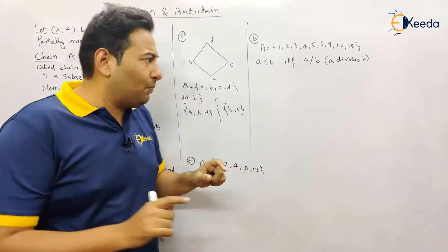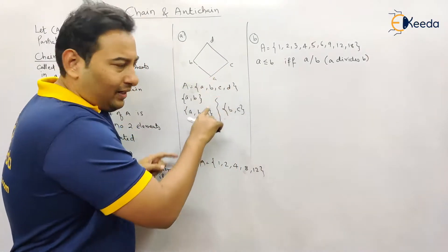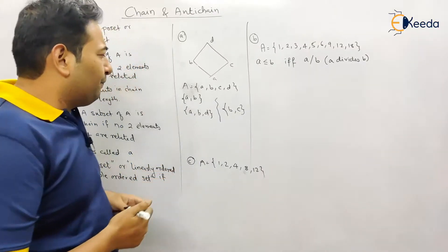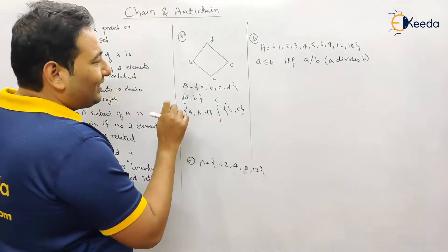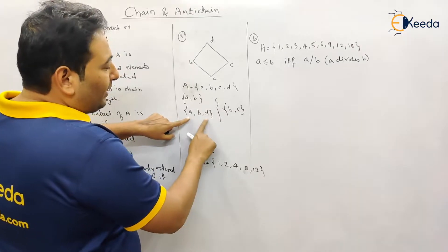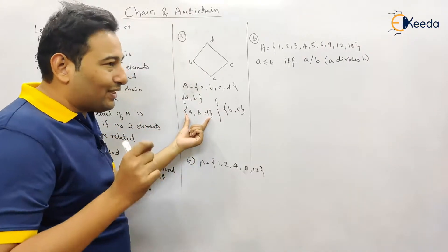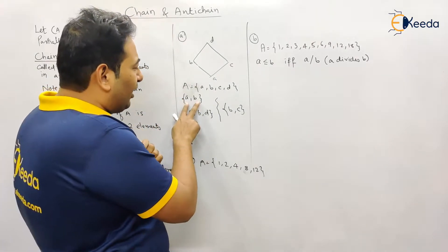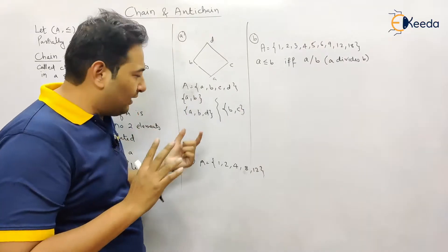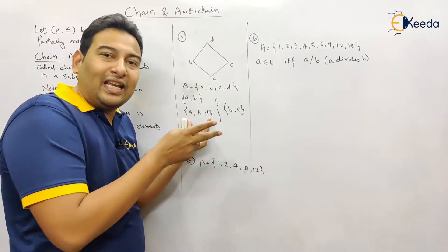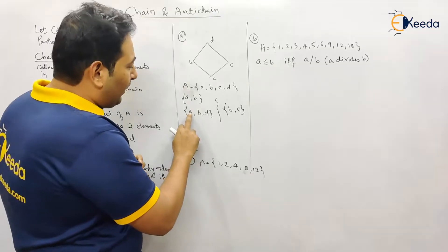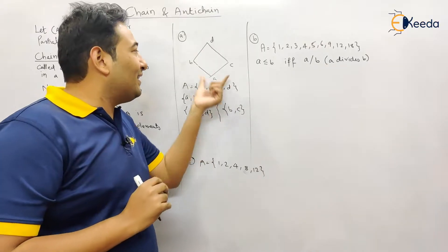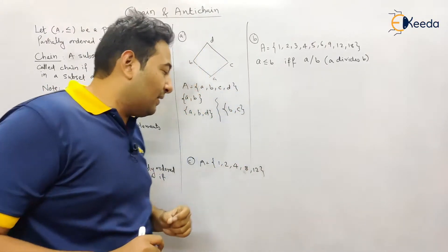How many elements can be there in a subset? There can be any number of elements — it just has to be a subset. The criteria for a chain is that any two elements you select from the subset should be related. For {a, b, d}, pick any two — a&b, a&d, b&d — they are all related, so it's a chain. For {a, b, c}, pick b and c — there is no relation, so it's an antichain.